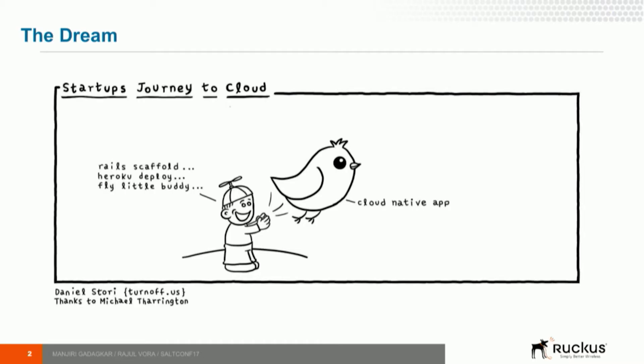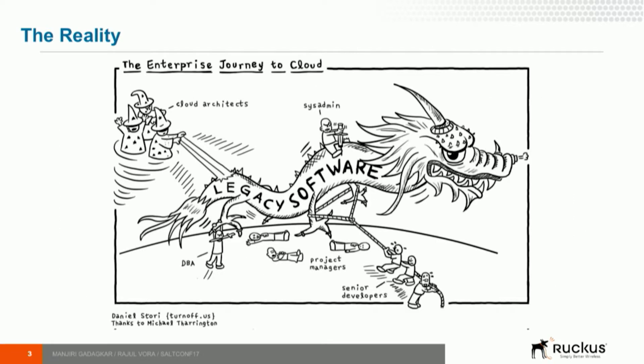So let's start with the dream: a little bit of code, push a little button, and there you have a microservice out there in the Kubernetes world. But that's a dream. Reality in most enterprises looks a lot more like a bunch of people wrestling down a dragon. Trying to get a release out is difficult — there's a lot of legacy software and legacy deployment paradigms you have to deal with in trying to manage this migration to the cloud.